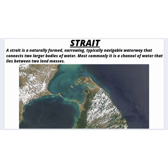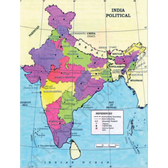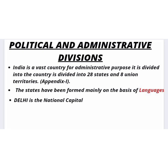Now we will study about political and administrative divisions. India is a vast country. For administrative purposes, it is divided into 28 states and 8 union territories as per the appendix.